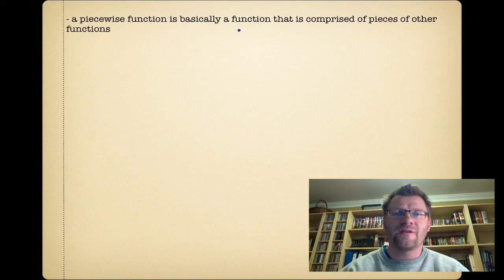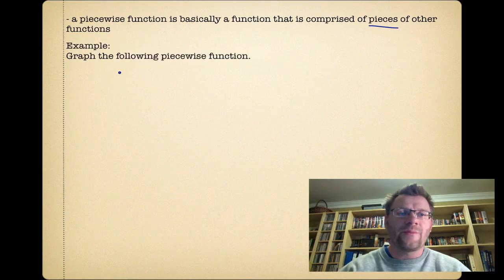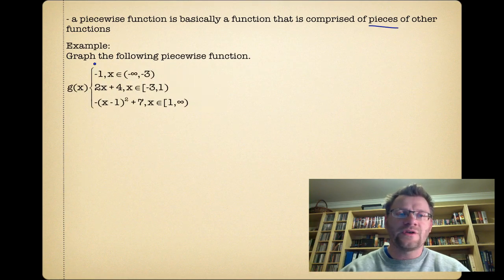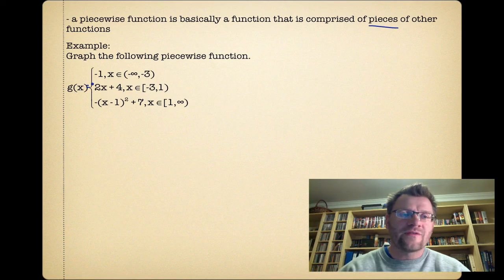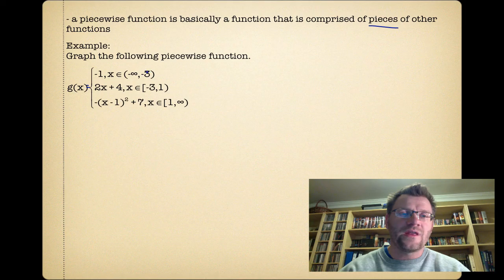So a piecewise function is basically a function that is comprised of pieces of other functions. For example, we're going to graph the following piecewise function. So this is g(x), there should be an equal sign in here. So g(x) is equal to negative one, and that's when x is in between negative infinity and negative three.